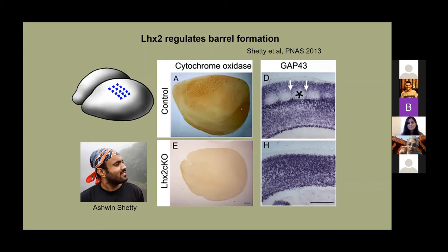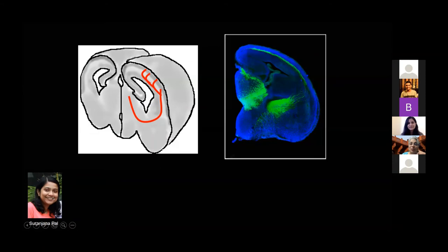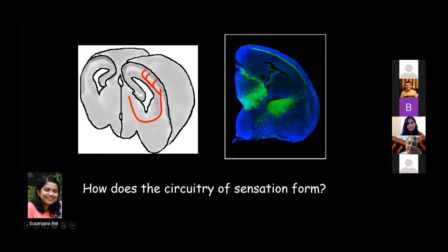If you knock out this gene only in the cortex and the input nerves are all okay, somehow there's a problem when they enter the cortex — so what is that problem? This is the subject of a sort of Alice in Wonderland-like story that my student Suranjana Pal worked on for her thesis. Here's a cartoon — the nerves start, take a U-shape, enter the gray ribbon of the cerebral cortex, and ideally form barrels. In this embryo section, the nerves are coursing under the cortex and haven't yet entered — they haven't had time.